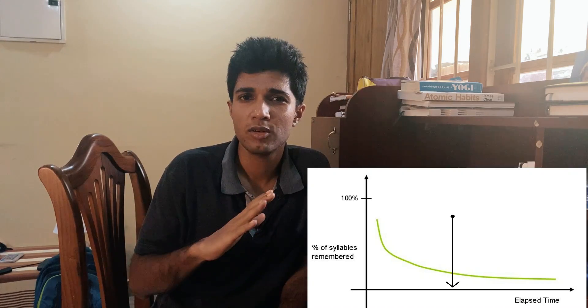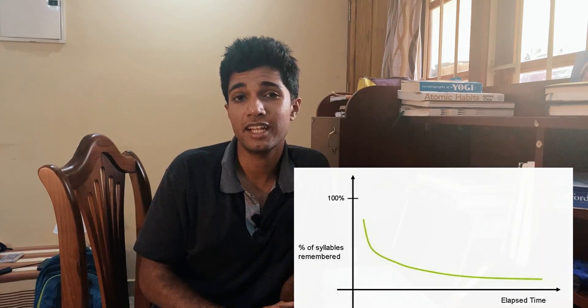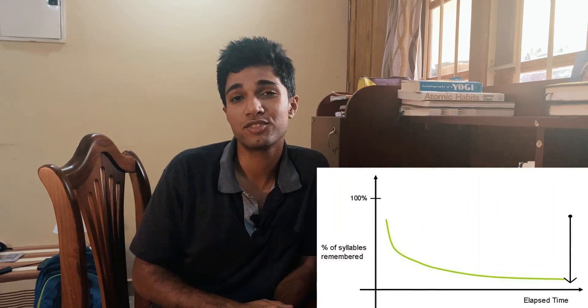Within three days he had forgotten most of the words he had memorized. You can guess how much I actually remembered after 10 days of not reviewing. This means that the brain forgets information at an exponential rate, provided it is not recalled or reviewed. When we cram for an exam, the information might be present in short-term memory and we might just manage to pass, but that information will not be retained for the long run.